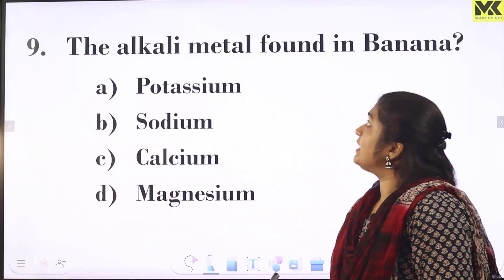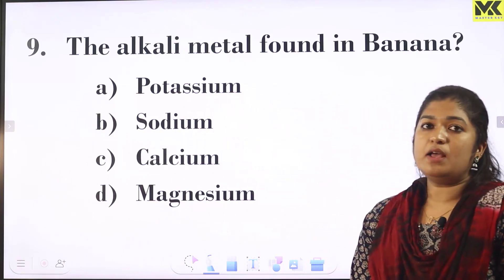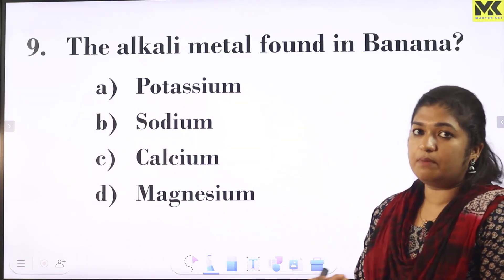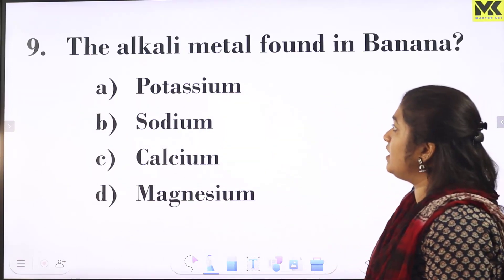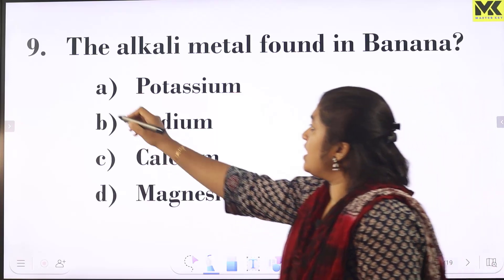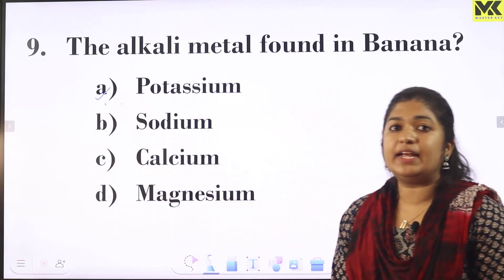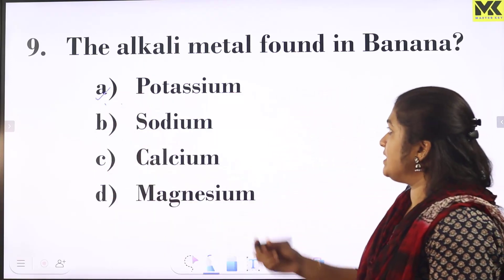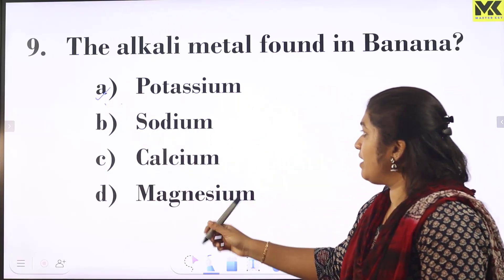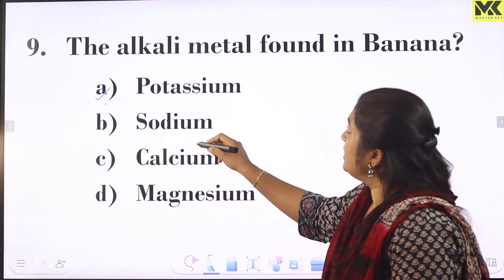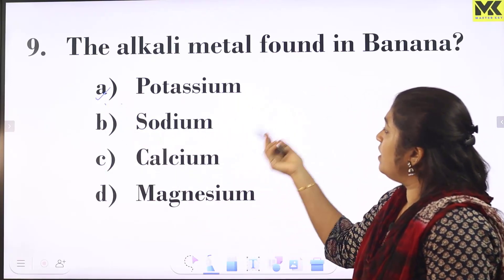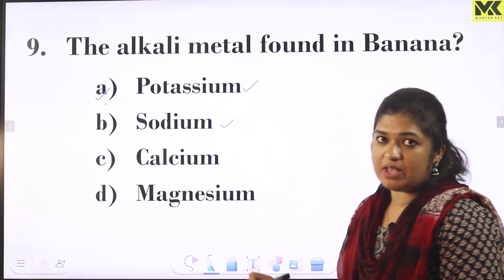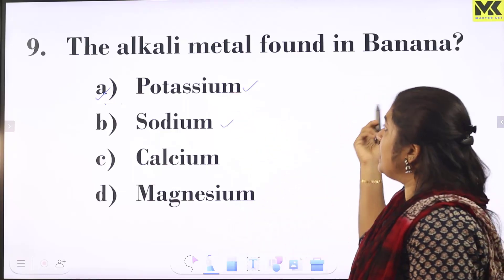The alkaline metal found in banana: the alkaline metal present in bananas is potassium. Among the options — potassium, sodium, calcium, magnesium — the answer is potassium.